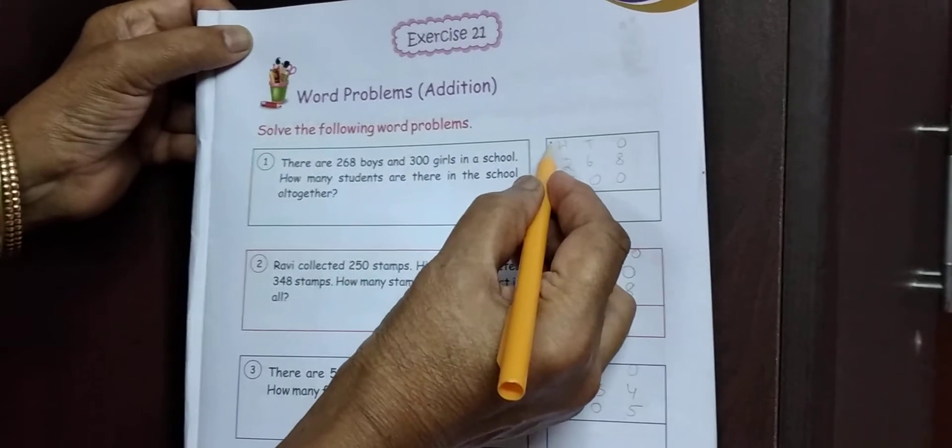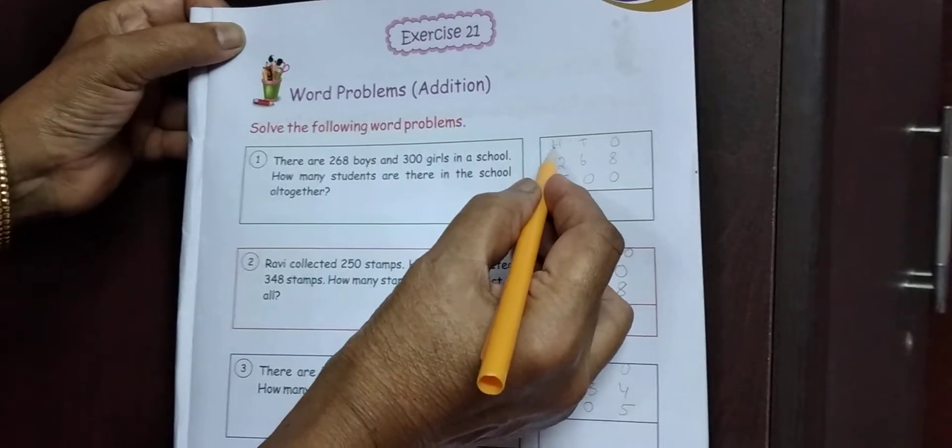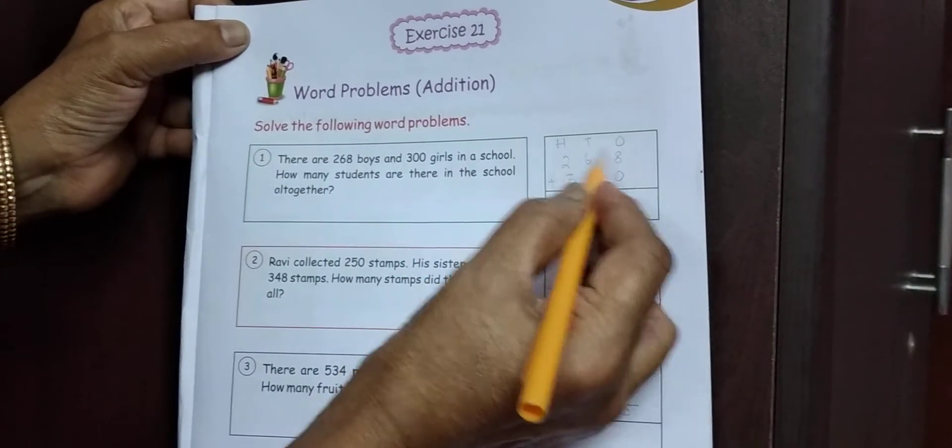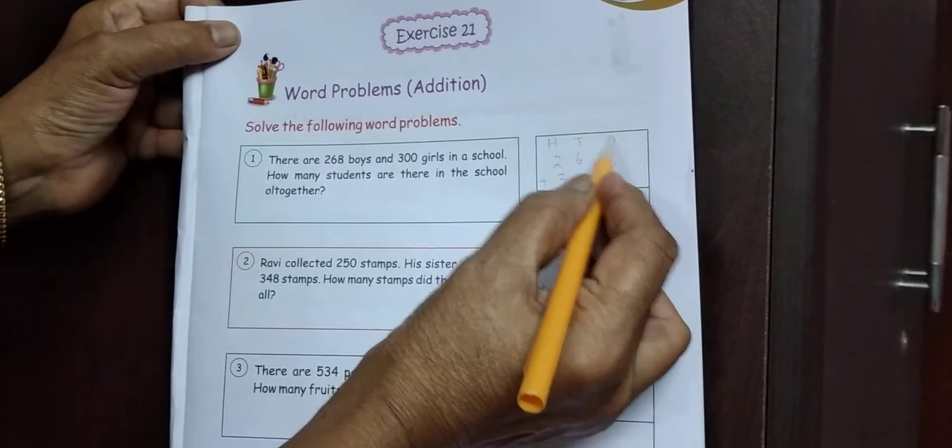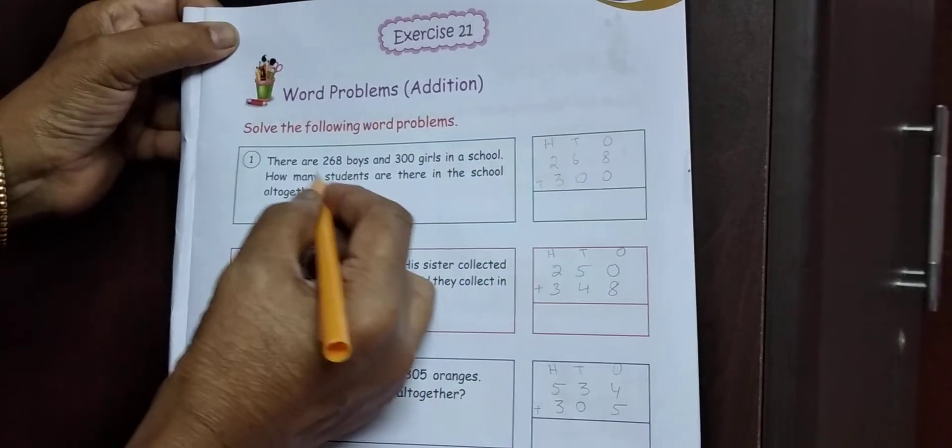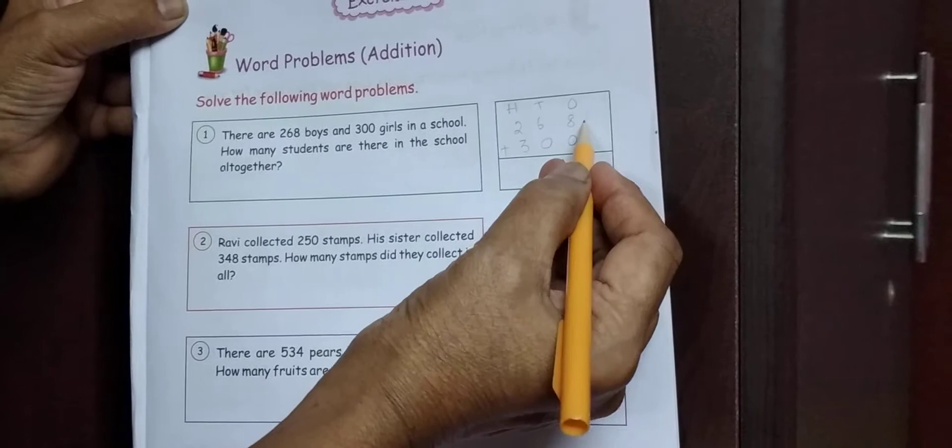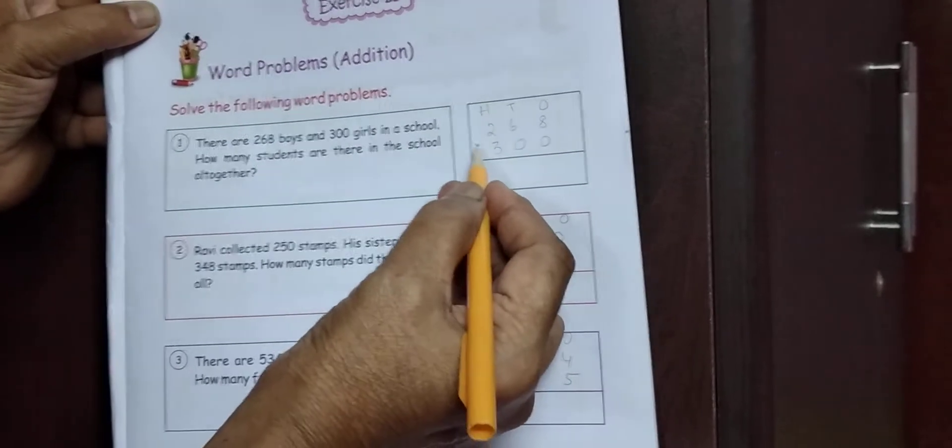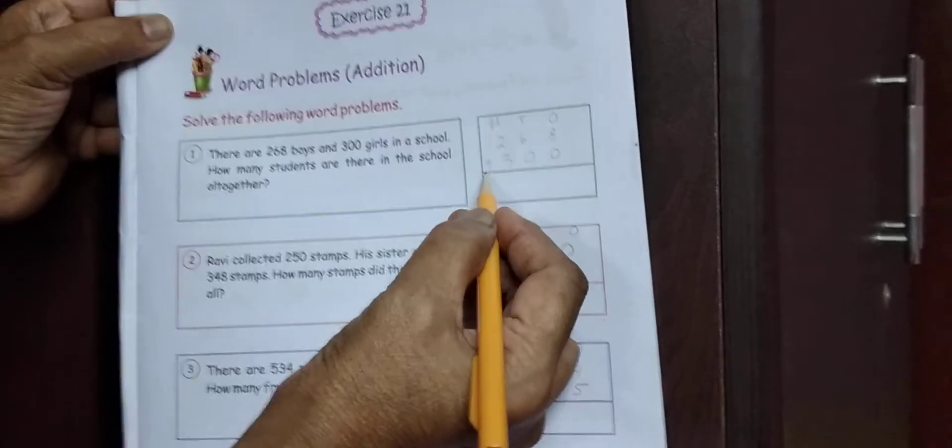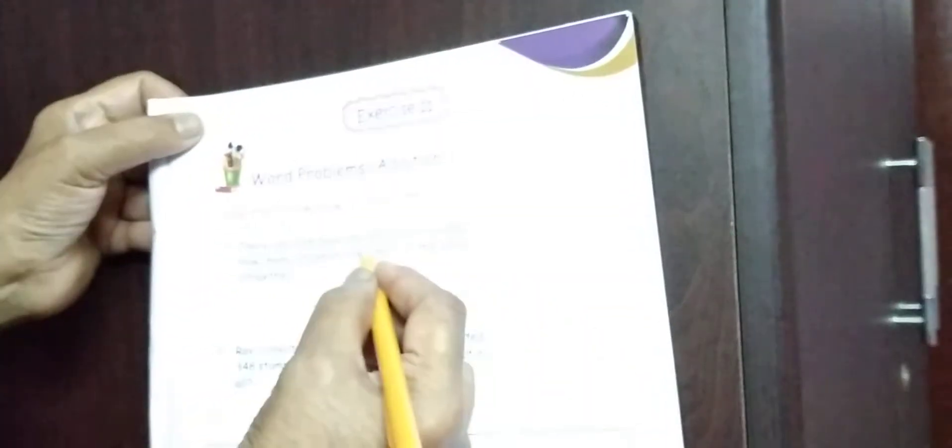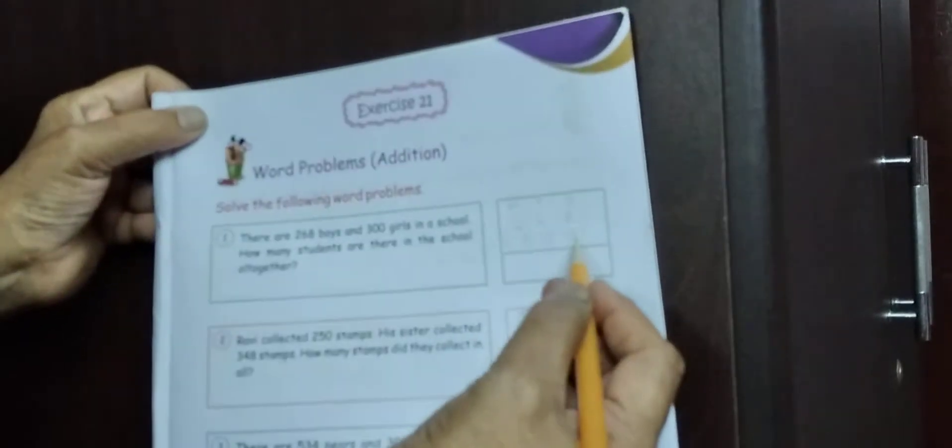पहले, क्या करके? H. H मतलब 100. T मतलब 10. O मतलब 1. इधा में क्या है? 268. 200, 6, 10, 8, 1. Addition मतलब प्लस. प्लस दो. बाद में 300. 300. 10 का घर में 0. 1 का घर में 0. Add करो.